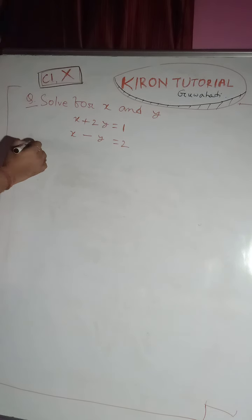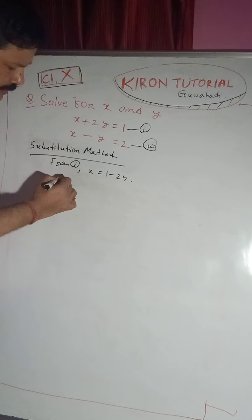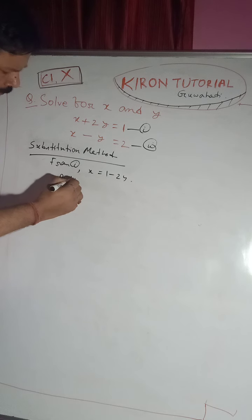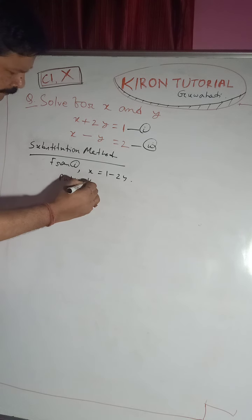The substitution method is applied — this is the easy method. We have two equations: this is equation 1 and this is equation 2. From equation 1, we find x: x equals 1 minus 2y.